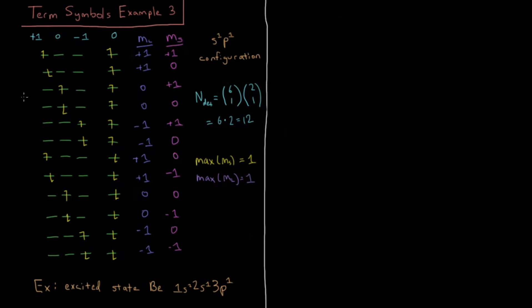According to the rules from the previous video, that gives me possibilities for term symbols, which include triplet P, triplet S, singlet P, and singlet S. Listing them in the order from starting at the highest S and highest L, decreasing L, then going down S. So the outer loop is decreasing S, the inner loop is decreasing L.